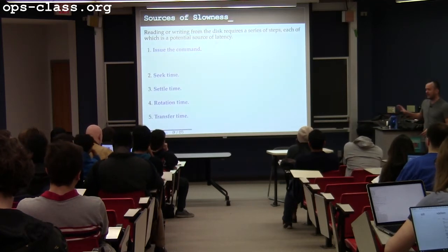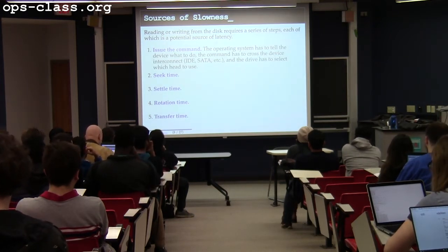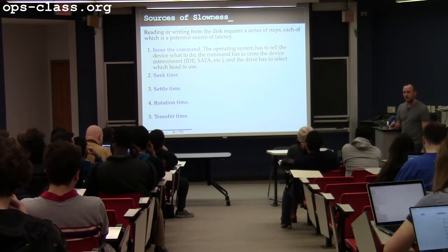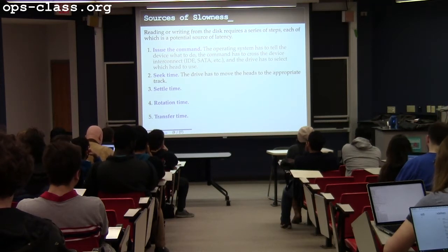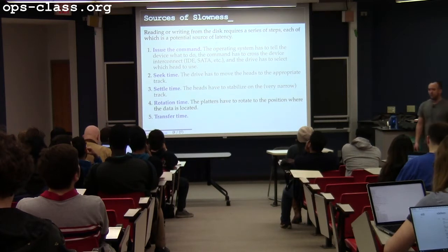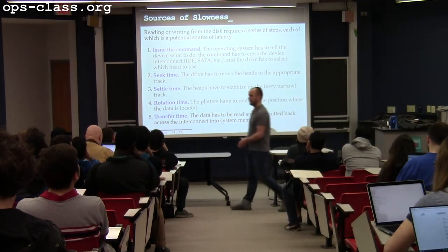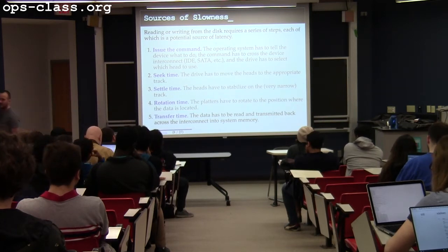Here's how we actually move things around on a disk. The OS has to send an electronic signal to the disk using some protocol to tell it what to do. The drive has to position the heads appropriately, wait for the heads to stop vibrating and stabilize over that very narrow track, wait for the platter to rotate to the correct location, and then pull data off the platter and transfer it back to the system — usually to a memory buffer. The slow part that dominates is seek time — seek and settle.